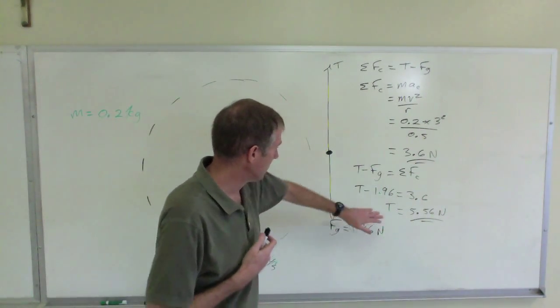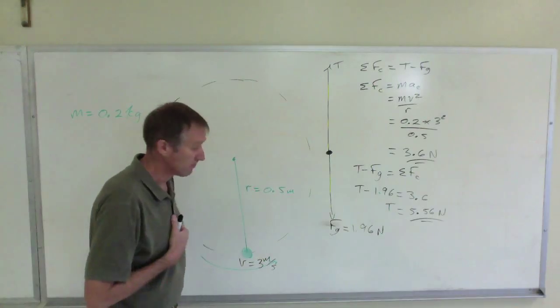And there you have it. So the tension in the string is 5.56 newtons at the very bottom. All right?